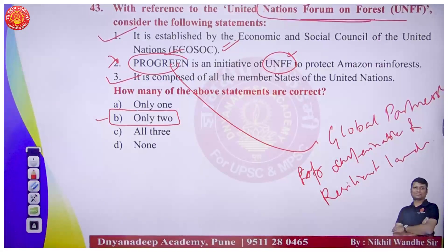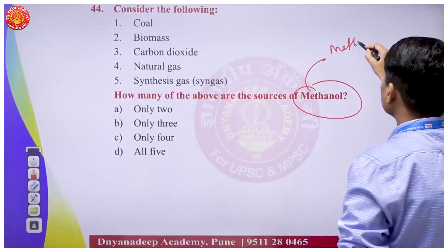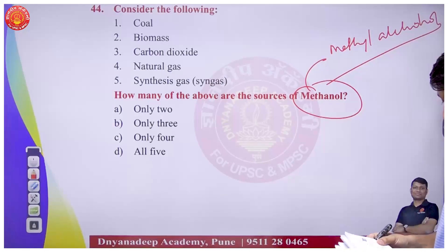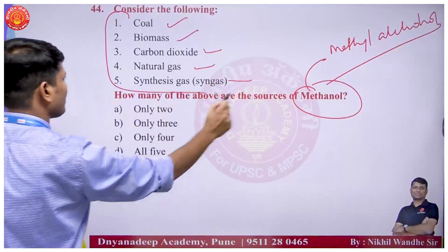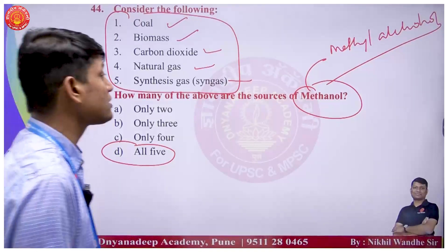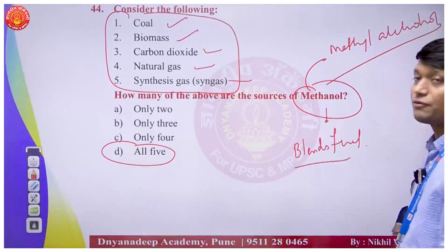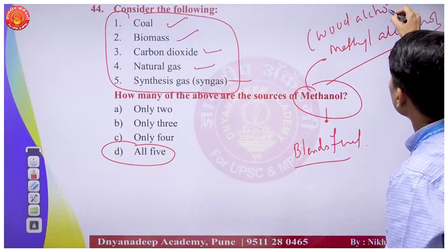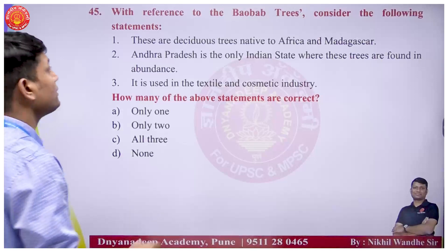All five options are correct regarding methanol production. Methanol can be blended with fuel. Another name for methanol is wood alcohol - remember this alternate name.